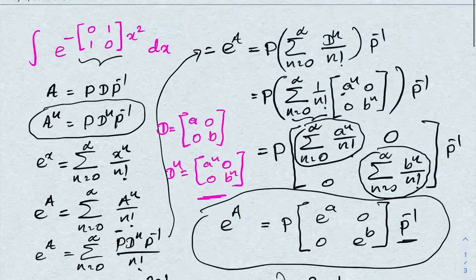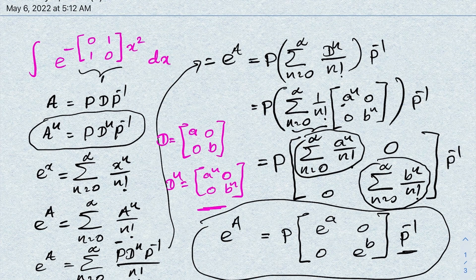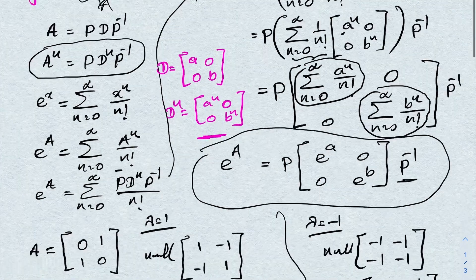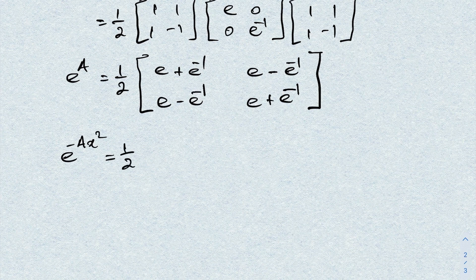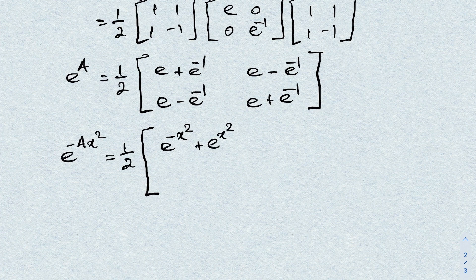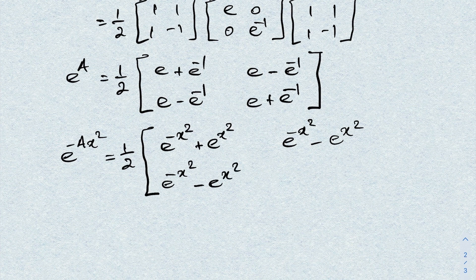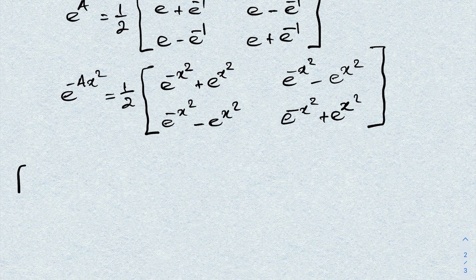In our integral we have e to the minus A times x squared. So e to the minus A x squared equals one half times the matrix [[e^(-x²) + e^(x²), e^(-x²) - e^(x²)],[e^(-x²) - e^(x²), e^(-x²) + e^(x²)]].